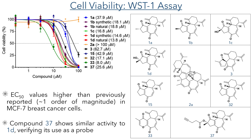It is worth noting that the EC50 values observed are approximately one order of magnitude higher than previously reported, and the authors attribute this to the full confluency of the MCF7 cancer cells used in their assay.